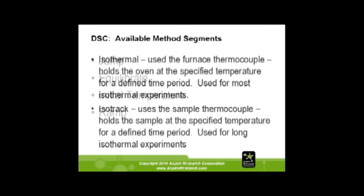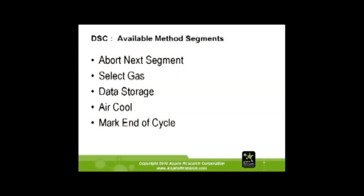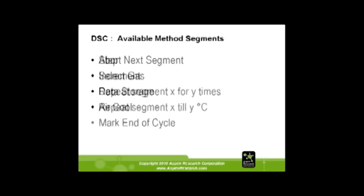Here are some available programming segments. You can jump — go from 100 degrees to 120. Equilibrate: you start at an initial temperature and when everything is at a steady state, you tell it to continue. You can ramp. Isothermal uses the furnace thermocouple to hold the oven at a specific temperature. Isotherm tracking uses the sample thermocouple — this one is very hard on your instrument and I don't recommend it; I usually go with isothermal. You can also select gases: we have helium, air, and nitrogen. Data storage is good if you want to ramp a sample into equilibrium without recording that ramp. Air cool is typically used at the end of a run, and you can mark cycles — if you heat, cool, and reheat, you want to know where those cycles are.